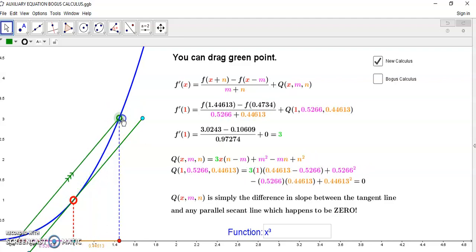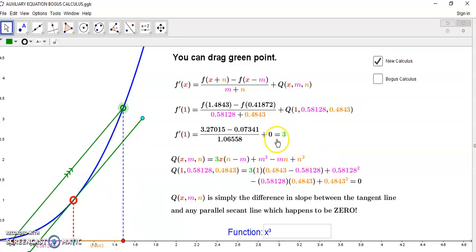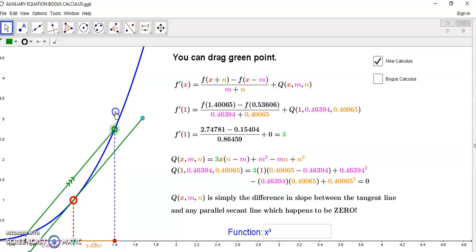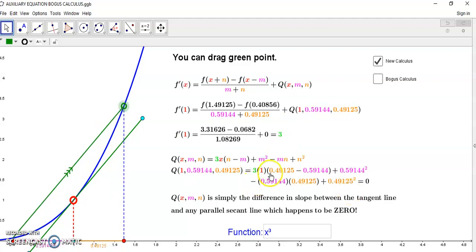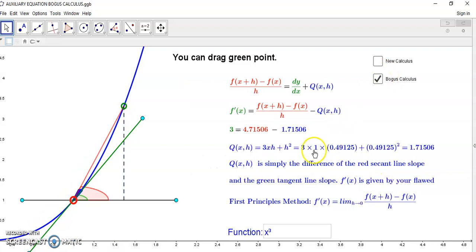And as you can see, the derivative in the new calculus is always correct, no matter where you are and how you calculate it. And of course, all the terms in m and n will be zero in the new calculus.